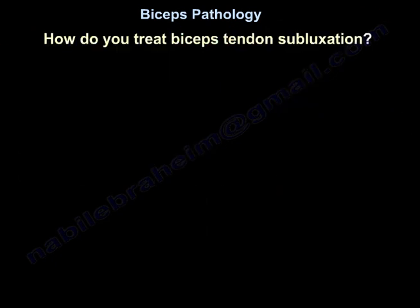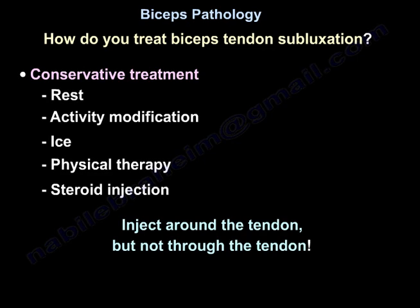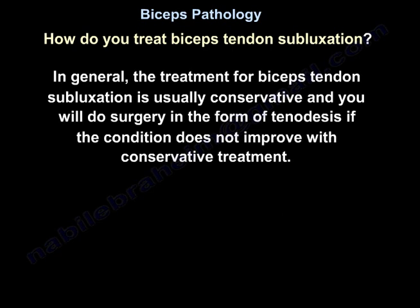Treatment of biceps tendon subluxation: conservative treatment includes rest, modification of activity, ice, physiotherapy, and steroid injection around the tendon but not through the tendon. In general, treatment for biceps tendon subluxation is usually conservative, and surgery in the form of tenodesis is done if the condition doesn't improve.